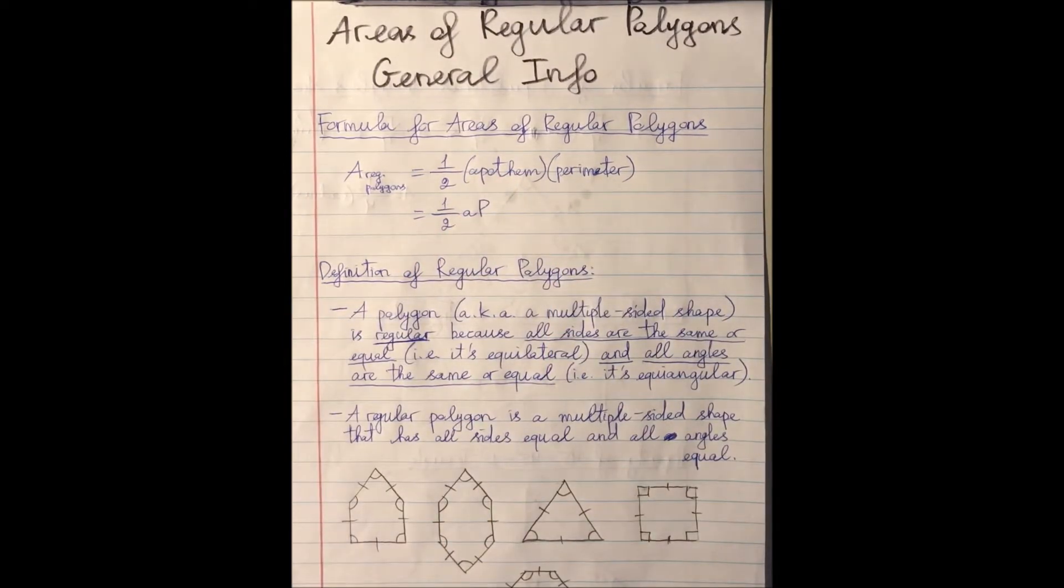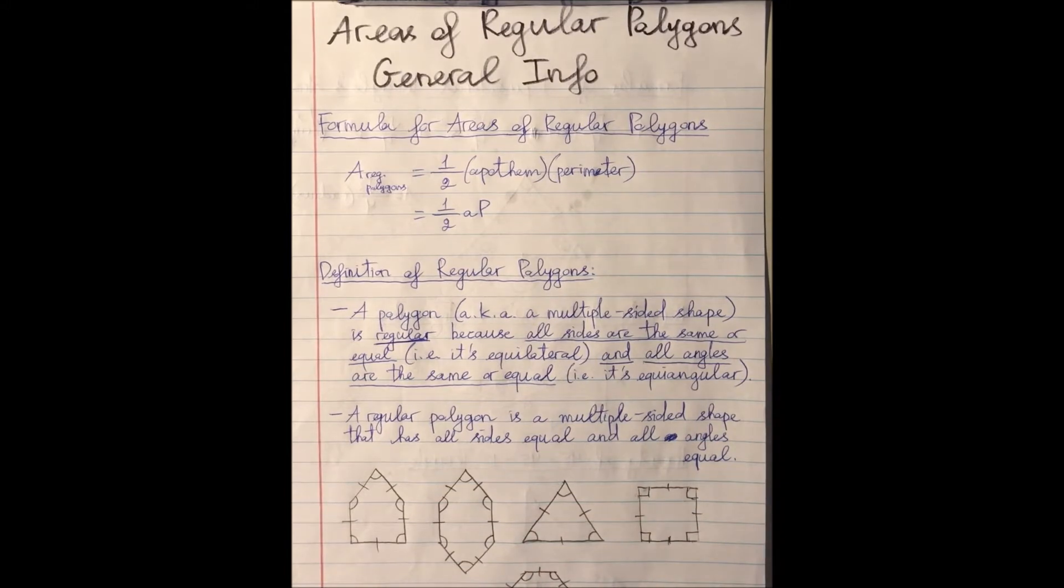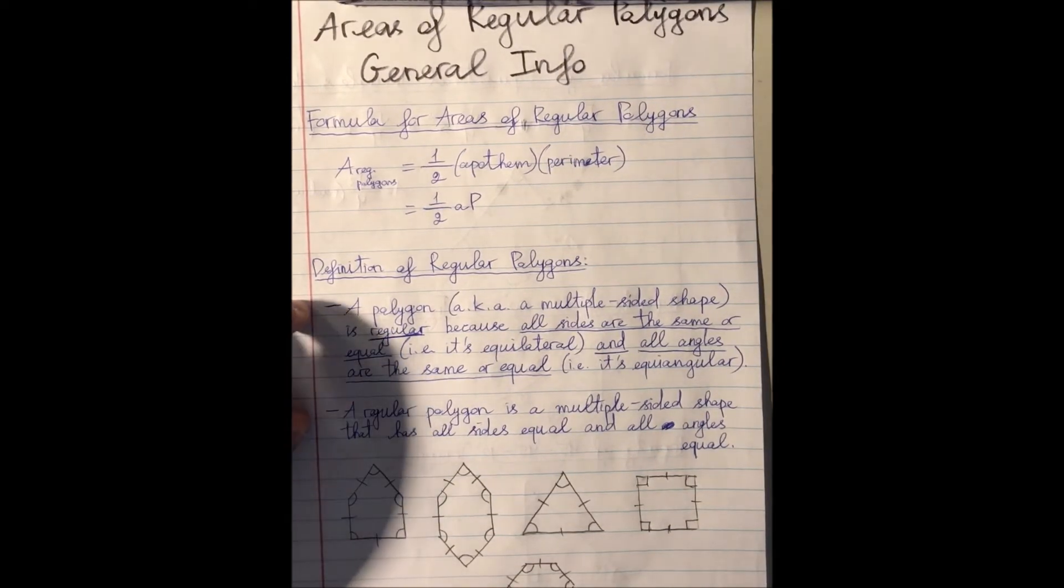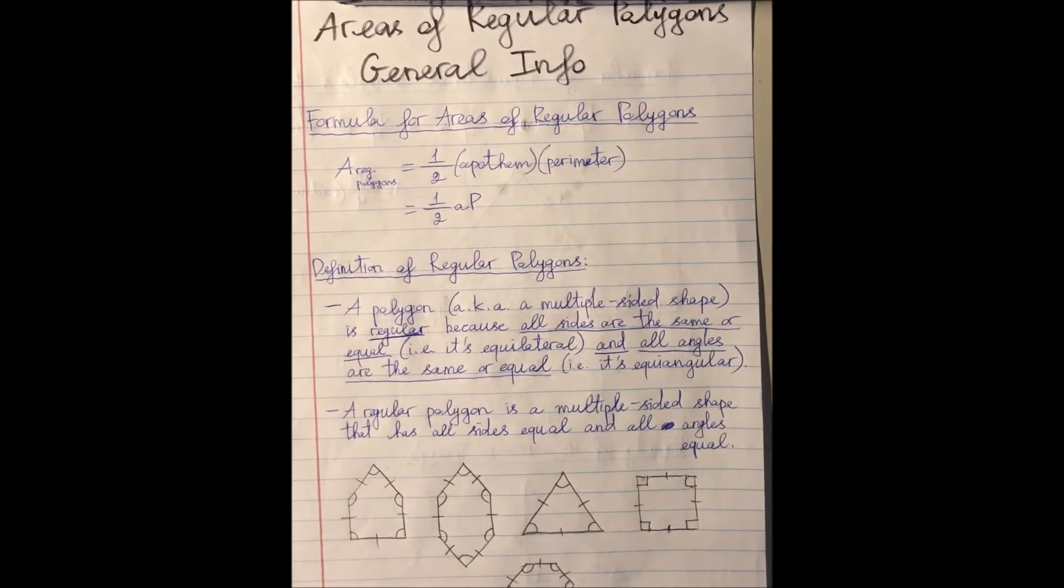Besides the formula, we also have to recall that the definition of regular polygons says that a polygon, which is a multiple-sided shape, is regular because it has all angles equal and all sides equal. When all angles are equal, the terminology for that is equiangular. And when all sides are equal, they call it equilateral. You probably see this definition, the second version here, in the textbook more than the first one, but I'd like to break it down for you to understand what it means.